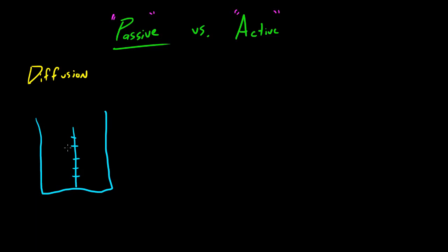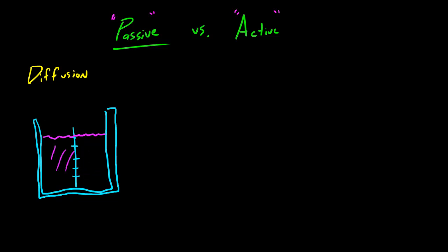Some bigger things like a cheeseburger couldn't pass through that screen. So we filled this bucket up with water and put a screen in the middle. Now of course there are water molecules all around, so this entire section is water. Now say on one side of the screen we dumped some sugar or something, so there's a bunch of sugar molecules over here.